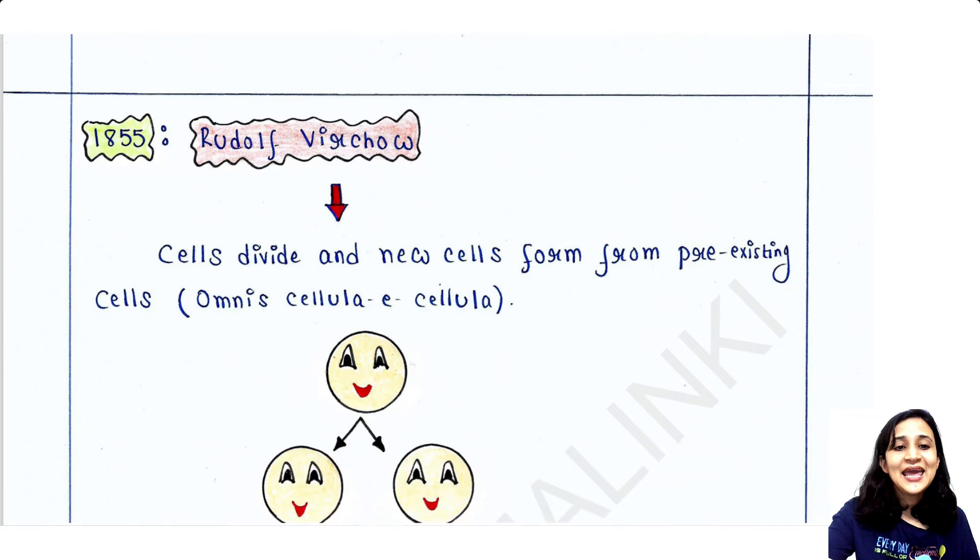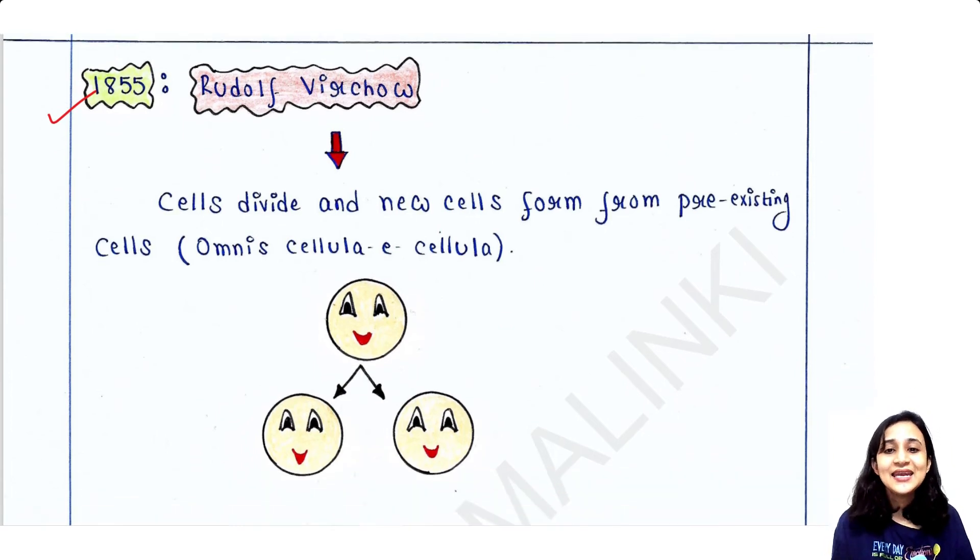In 1855, Rudolf Virchow said that cells divide. Cells divide and new cells form from pre-existing cells. So this is the mother cell. This is the pre-existing cell.